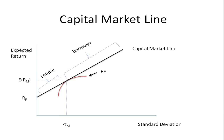If we look at a graph of this, here we have a graph in expected return/standard deviation space, or risk-return space. And we start with the efficient frontier here — this red curve. The efficient frontier represents all the portfolios that have the highest expected return for a given level of risk.